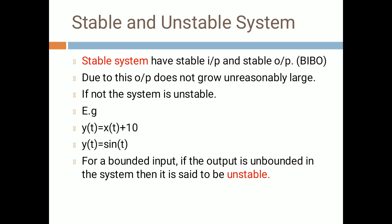For the given equation y(t) = x(t) + 10, if t = 0, then y(t) = sin(0) = 0, so this system is stable. However, if for a bounded input the output is unbounded, then the system is said to be unstable. It depends totally on the output — even if we give a bounded input, if we are getting an unbounded output, the system is unstable.